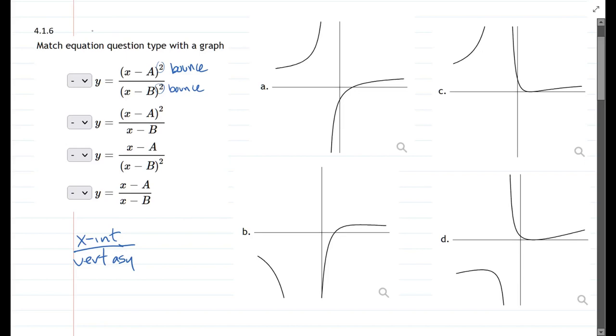Let's look at the first graph here. It can't be the first graph because our x-intercept crosses. So the first graph's out. We'll look at the second graph. The second graph the x-intercept crosses, so that's out.